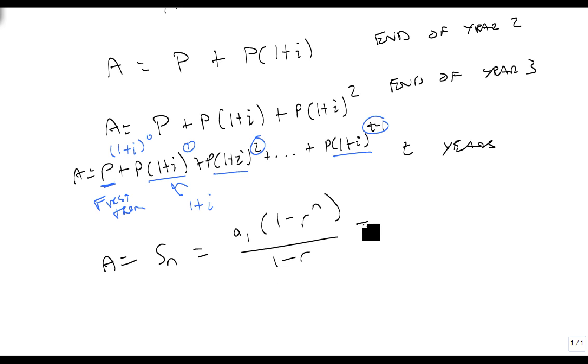Well, we can replace the R and the N, so we get our P times 1 minus 1 plus I to the N, all over 1 minus 1 plus I. 1 plus I, these should be pluses. There we go. That looks a little bit better.